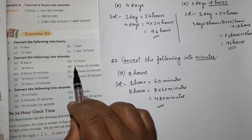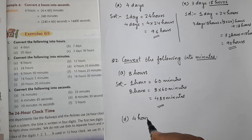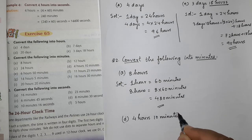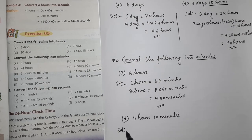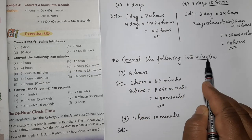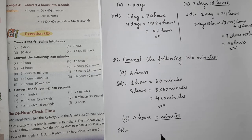So in question D, it is given 4 hours, 10 minutes. So I will write here 4 hours, 10 minutes. Solution. Now according to question, I need to convert into minutes. So that means I will keep this 10 minutes as it is.